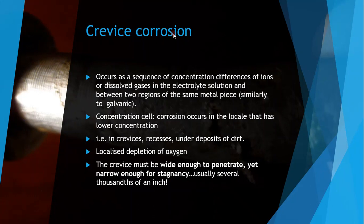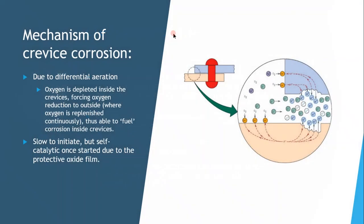Crevice corrosion occurs due to concentration differences of ions or dissolved gases in the electrolyte between two regions of the same metal piece — similar to galvanic corrosion. It occurs in crevices, recesses, and under deposits of dirt where there are localized sections of depleted oxygen. The crevice must be wide enough to allow penetration yet narrow enough for stagnancy, usually several thousandths of an inch. This is due to differential aeration: oxygen is depleted inside the crevice, forcing oxygen reduction to occur outside.